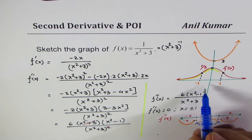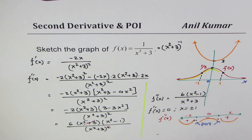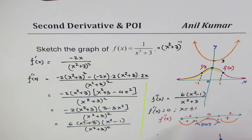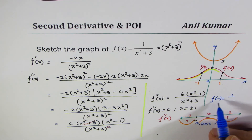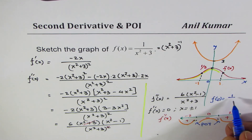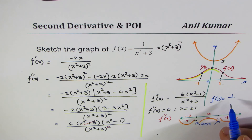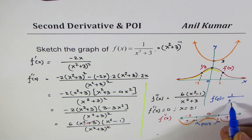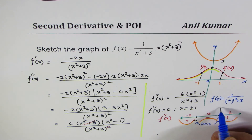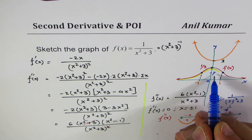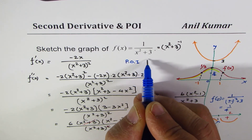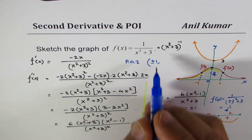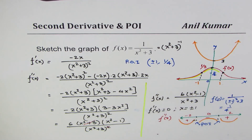At x = −1 (and by symmetry x = +1, since this is an even function), we find the y-value: f(±1) = 1 over ((±1)² + 3) = 1 over 4. So the points of inflection are at (±1, 1/4), which defines the curve very precisely.